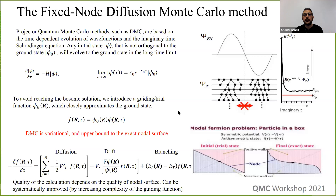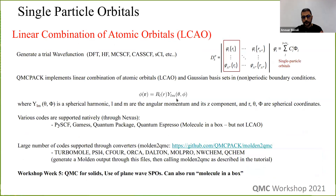For the choice of the trial wave function, we pick a guiding function whose determinant part can be generated from any single-particle orbital. In molecular cases, we often choose a linear combination of atomic orbitals or Gaussian-type orbitals (GTOs), generated through DFT, Hartree-Fock, MCSCF, CASSCF, selected CI, and others. This is your starting point — the antisymmetry part that also contains the nodes of the wave function.